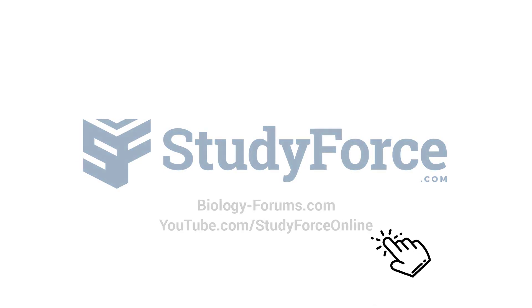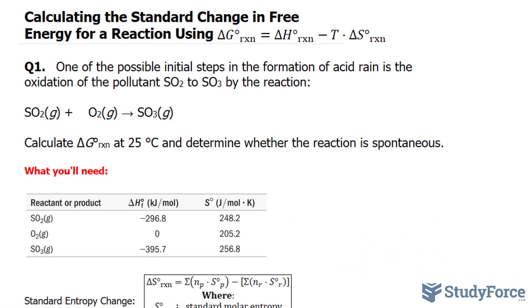In this lesson, I'll show you several examples on how to calculate the standard change in free energy for a reaction using the formula delta G is equal to delta H minus T times delta S.